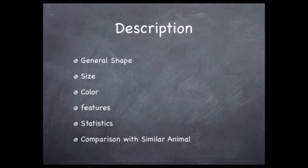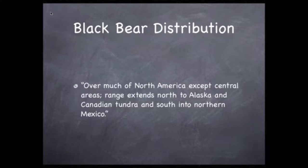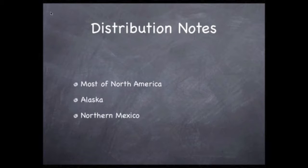The statistics are found on the back of the card. As for the distribution, we mean where on earth this animal is found. The range of the animal is often begun with one location and ended with another. An example of this would be that black bears range from the east coast of Canada to the west coast. The black bear's distribution is also on a map and described with words. Those word descriptions will set a pattern of how we report on this work. On the card, it says: over much of North America, the range extends north to Alaska and the Canadian tundra and south into northern Mexico.